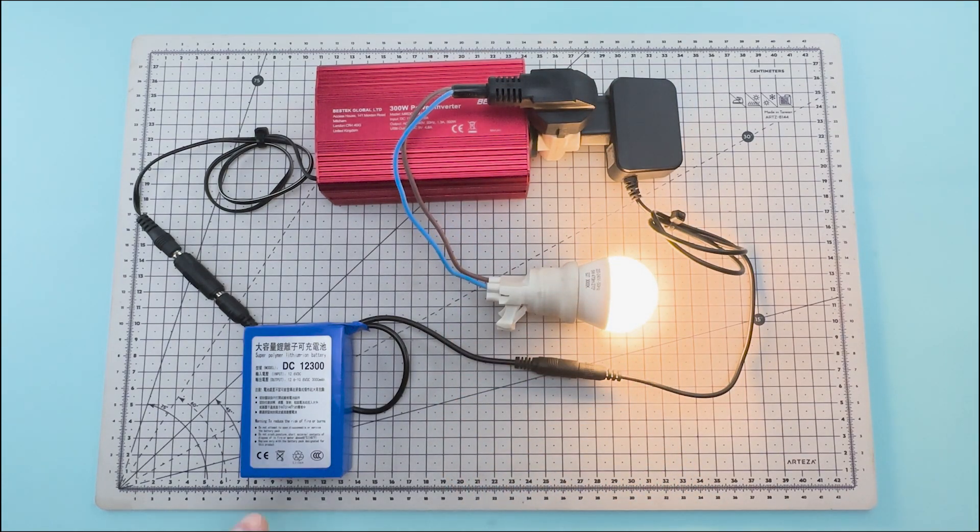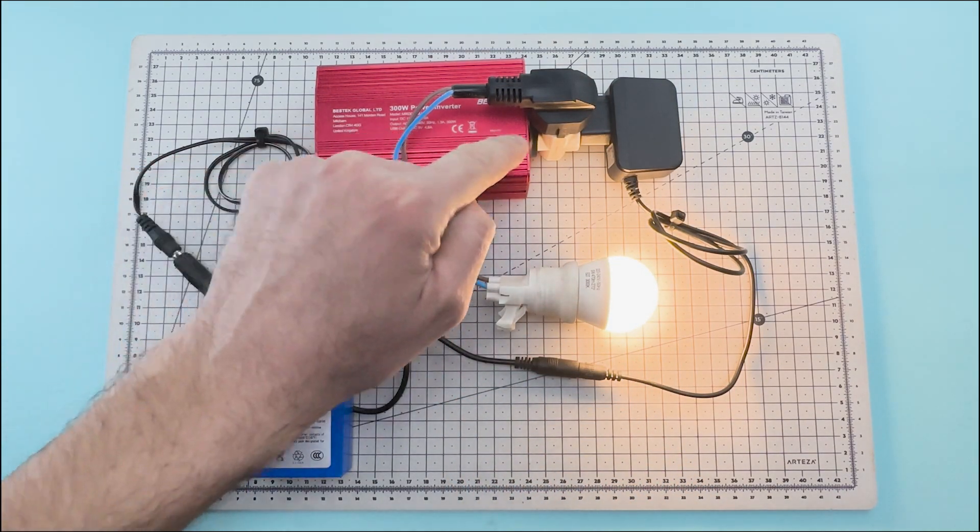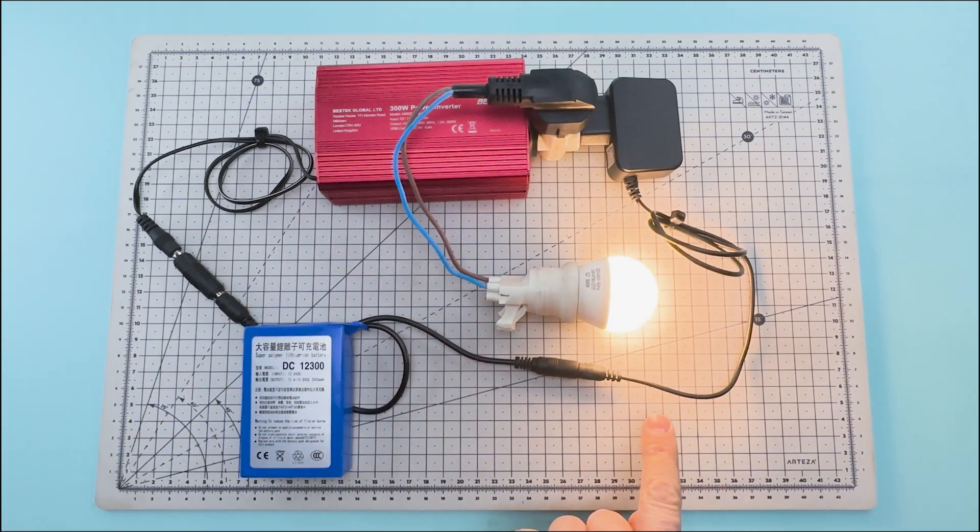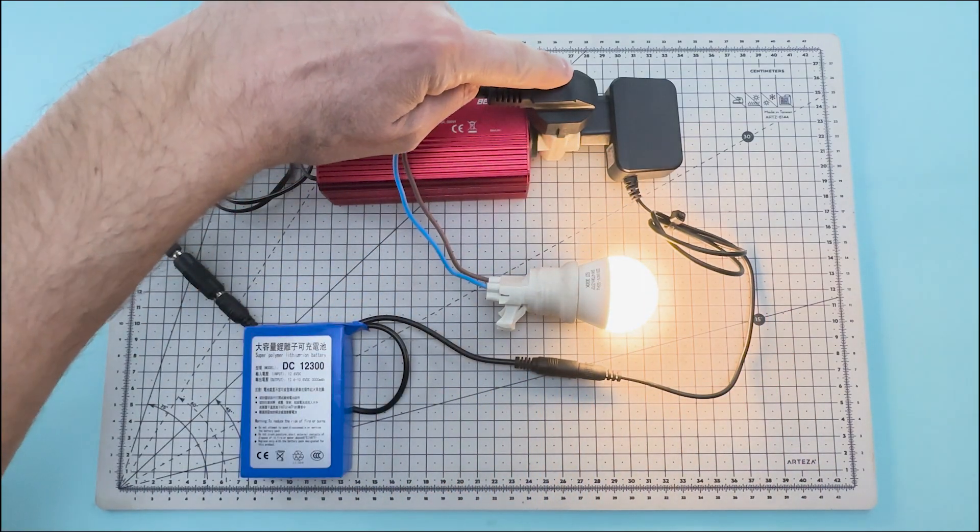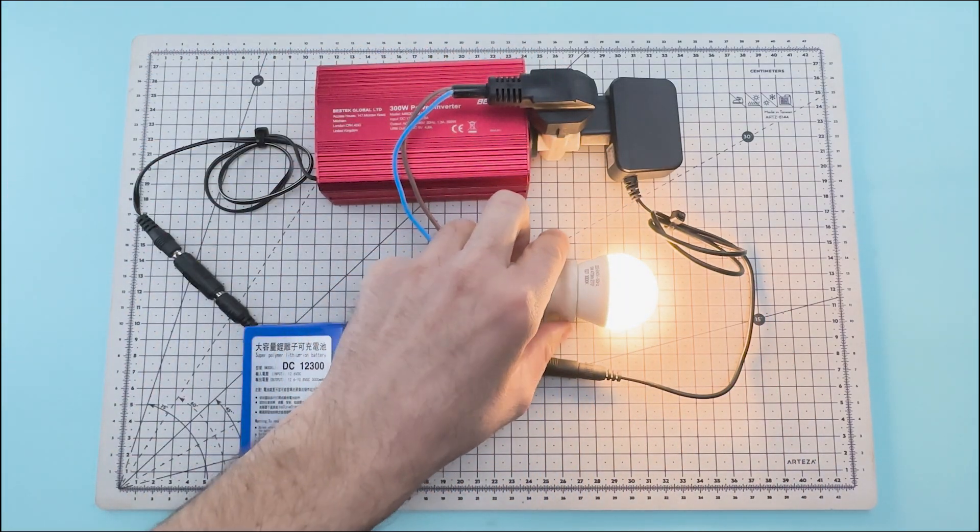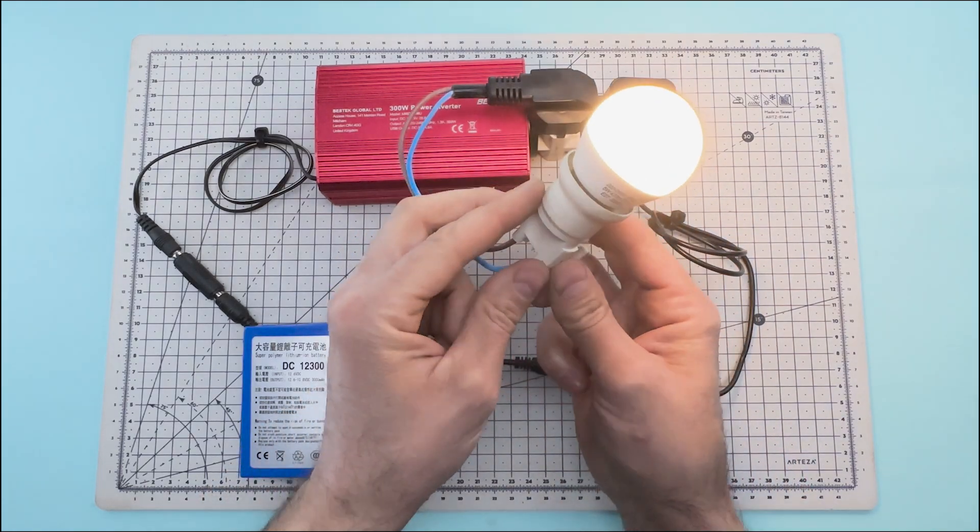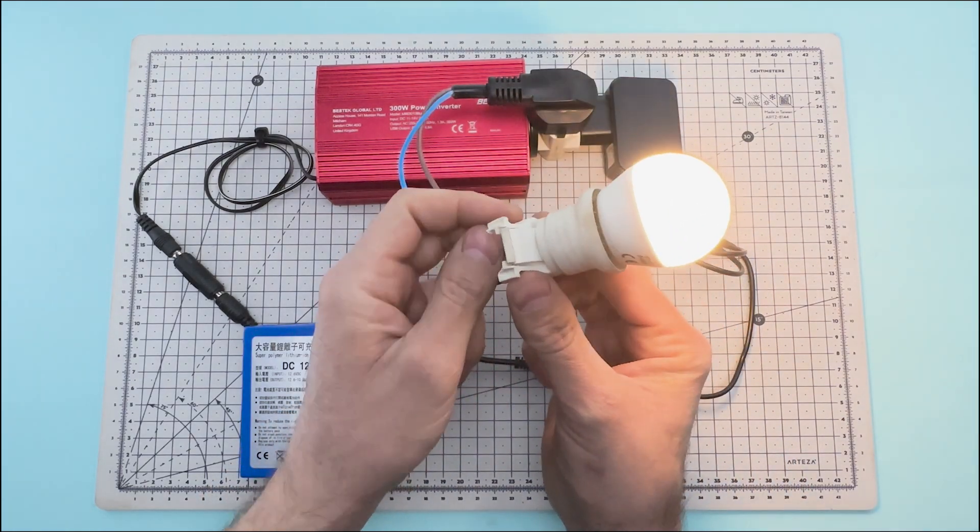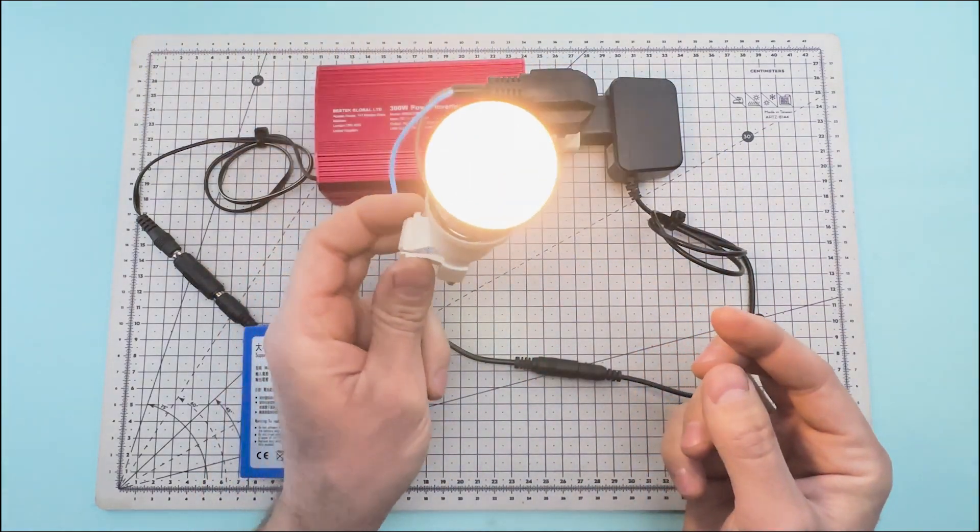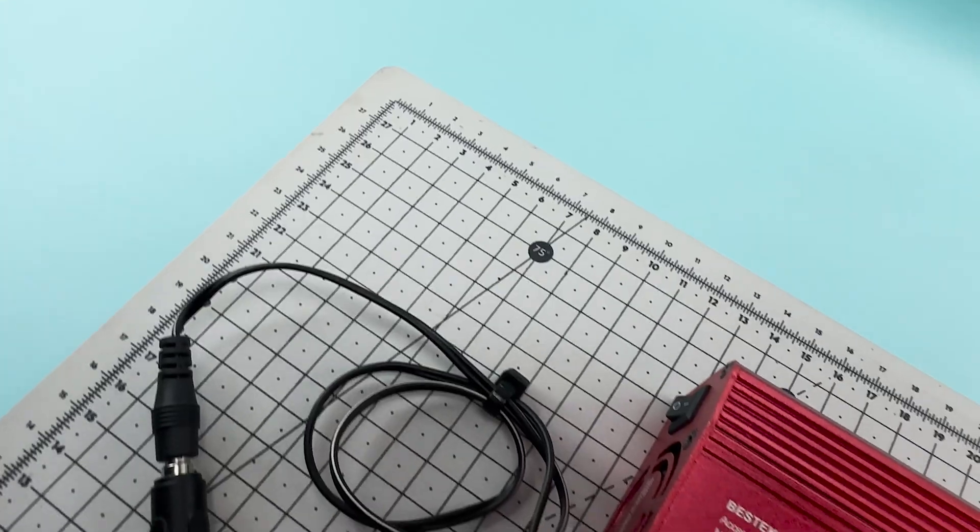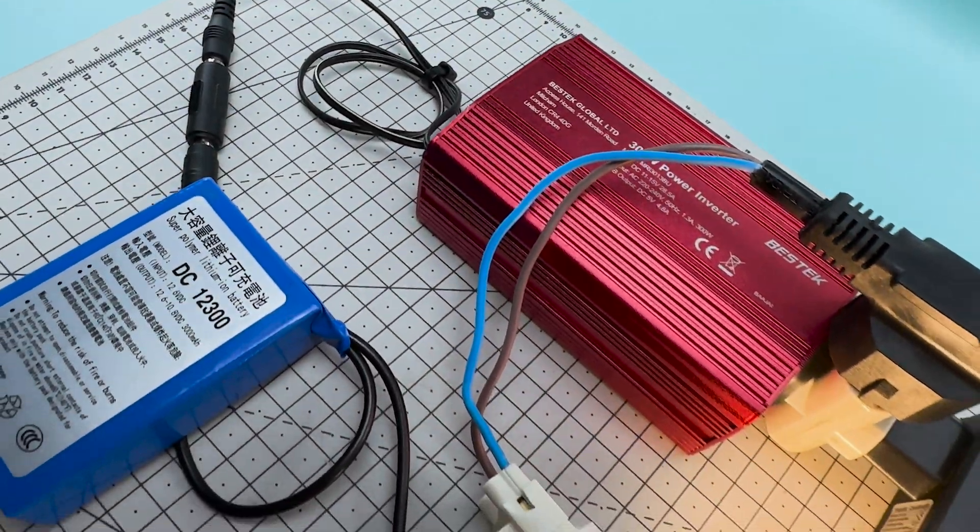The battery powers the inverter. The inverter transforms the current to 220 volts, and it is transformed back to 12 volts to recharge the battery. Plus, we have surplus energy that we use to power the light bulb. Will this infinite energy regeneration system last a long time? Write your opinion in the video comments.